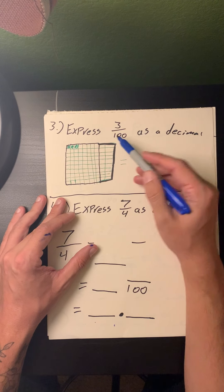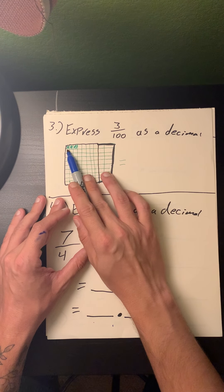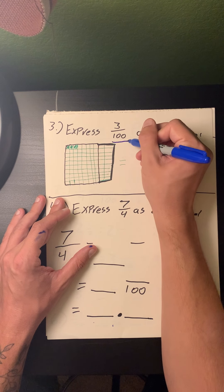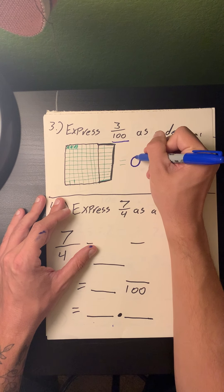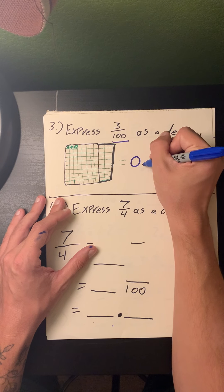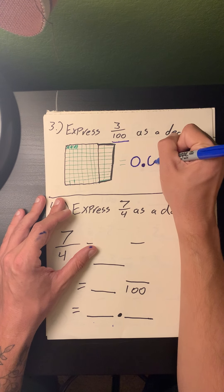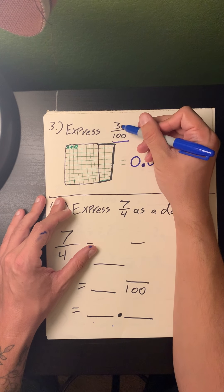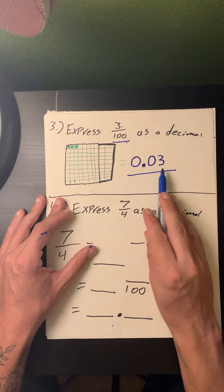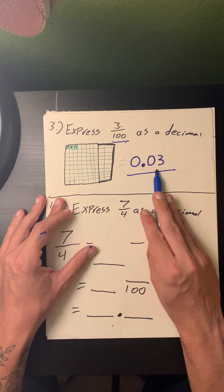Now I have a denominator of 100. I need to express 3 one-hundredths as a decimal. I've drawn out a grid — 100 cubes with 3 squares filled in. Because it already has a denominator of 100 and is not a mixed number, I put a placeholder zero in the ones spot, a placeholder zero in the tenths spot, and then plug in my 3. Three one-hundredths as a decimal is 0.03.